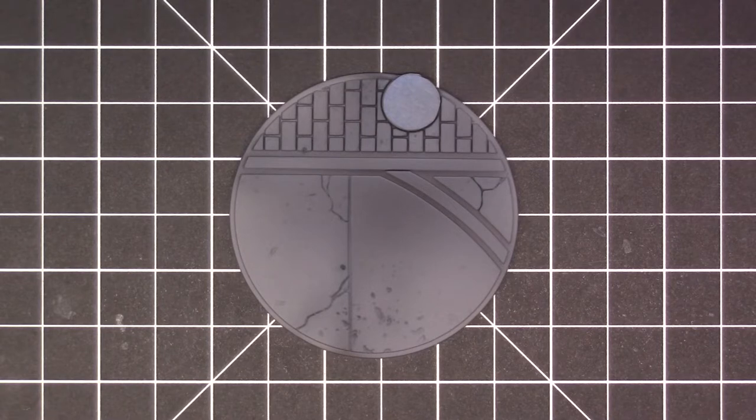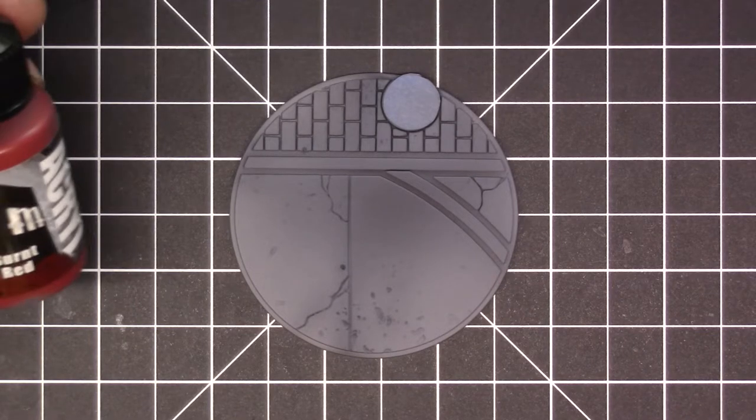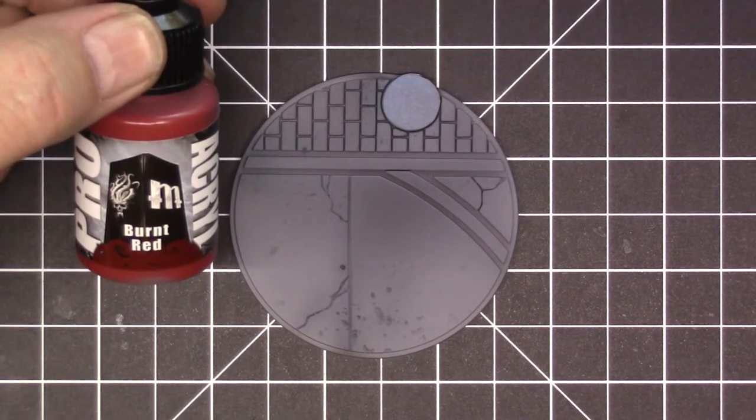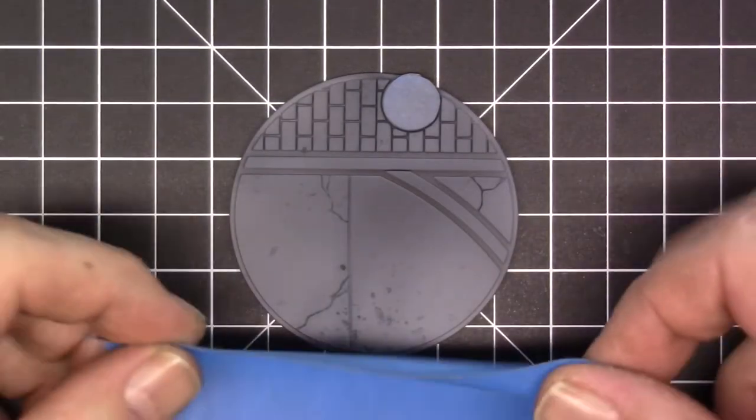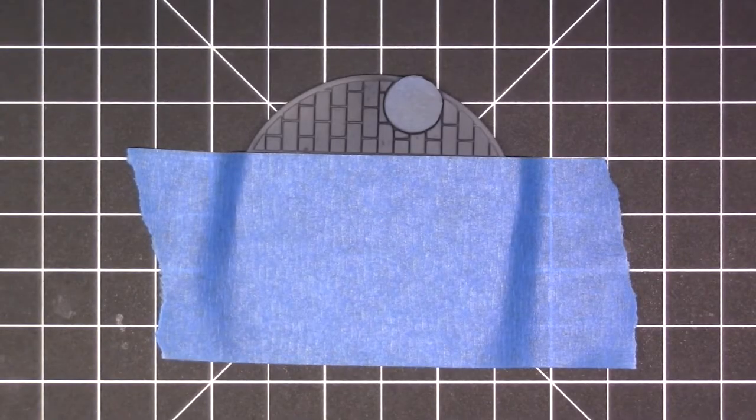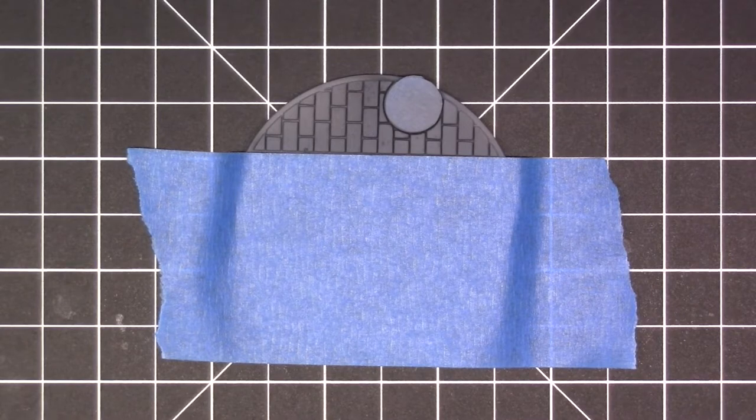I want to paint these bricks red, so what I'm going to do is take some of this burnt red and spray it. But first I want to take some regular painters tape and mask off the brick. I'll go and spray that and come back and show you what it looks like.